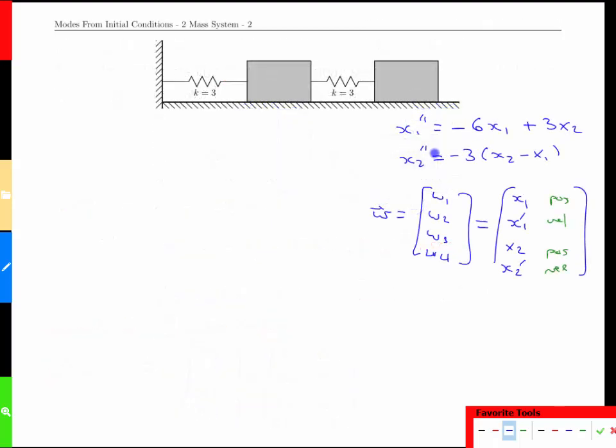Here we've copied over the differential equations in second order and the definition of the new variables. The next step is to find what the time derivative of that new w vector is component by component. All that means is evaluating what the derivative of say w1 is.